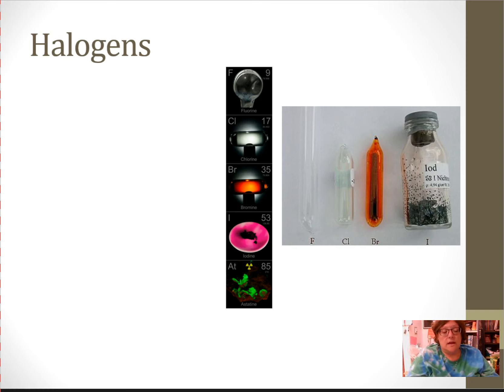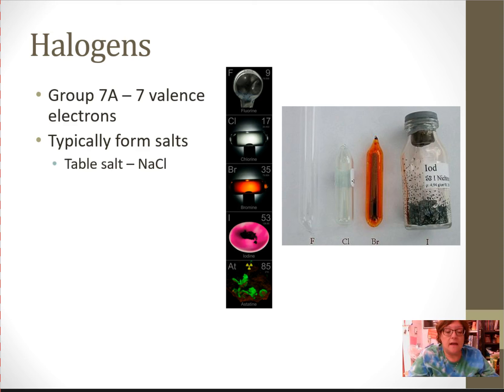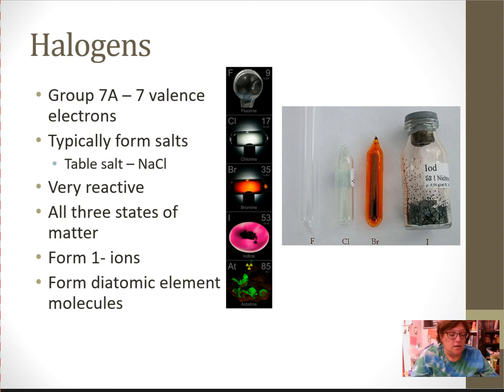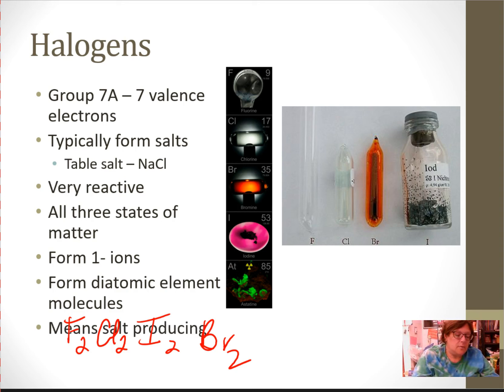The next family, second to the end, is the halogen family. The halogen family have seven outer shell electrons. They form salts. In fact, the name halogen means salt forming. They are very reactive. Fluorine and chlorine are both gases. Bromine is a liquid. It's one of two liquids at room temperature, the other being mercury. And then iodine is a solid. They form negative one ions. And they form what we call diatomic elemental molecules. Chlorine is always in a pair. Fluorine is always in a pair. Iodine is always in a pair. Bromine is always in a pair. I'm assuming tellurium would because it probably acts the same, but we're not going to worry about him right now.